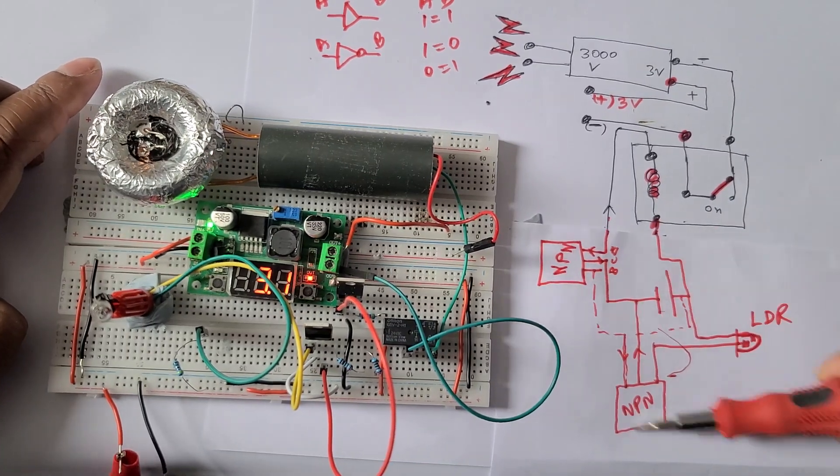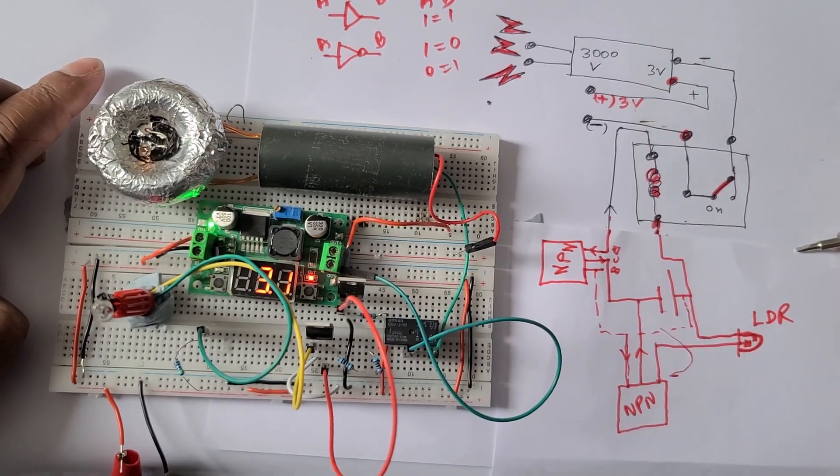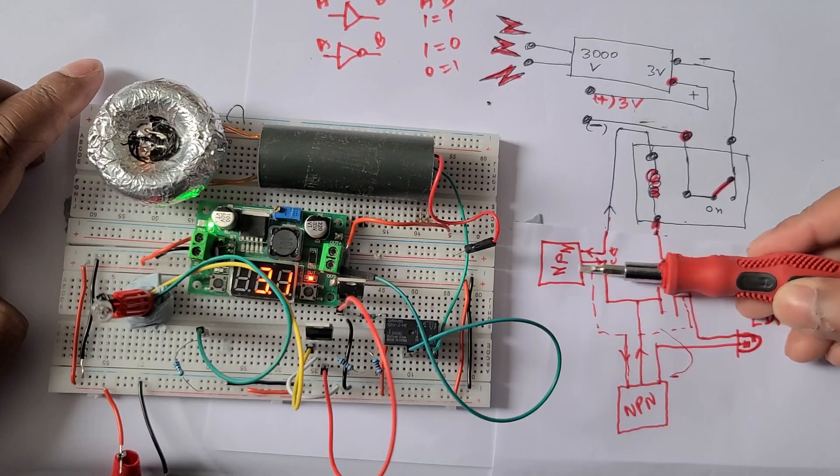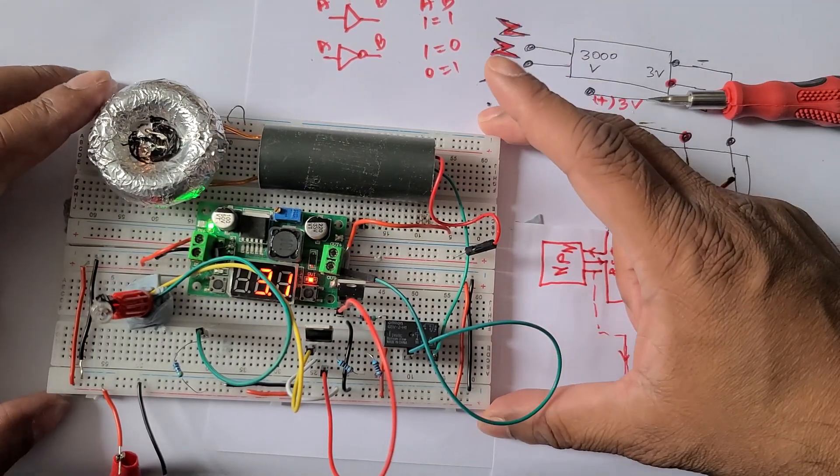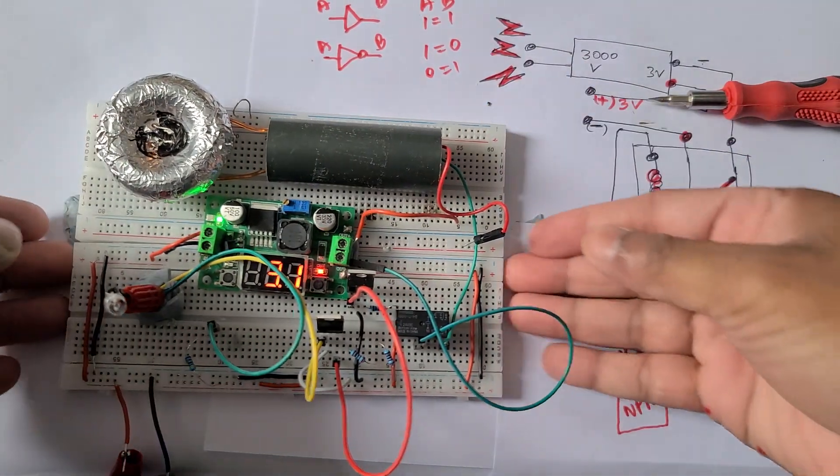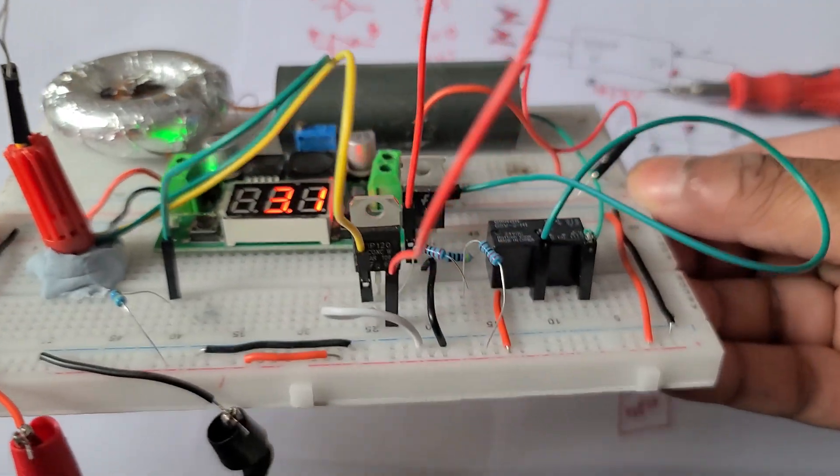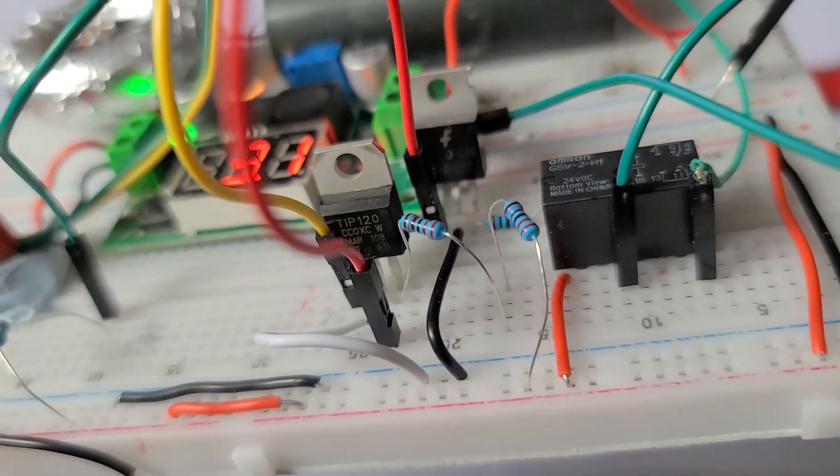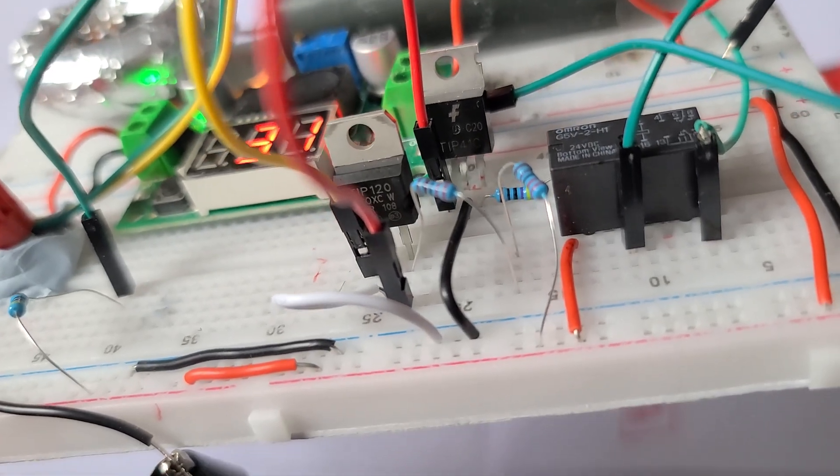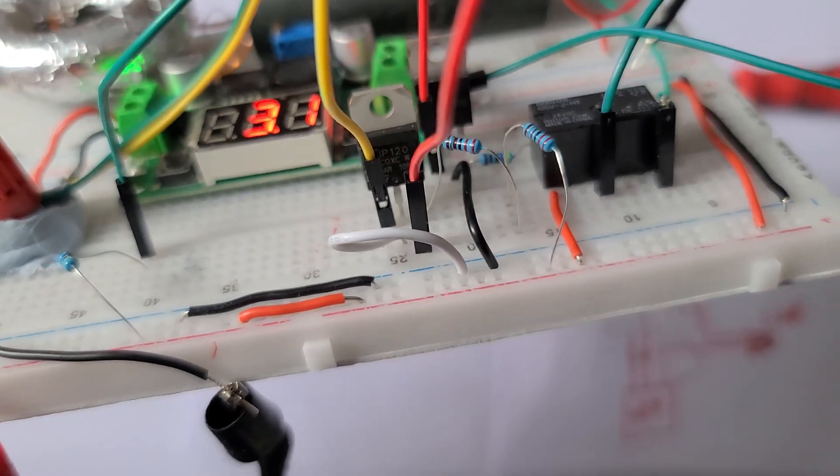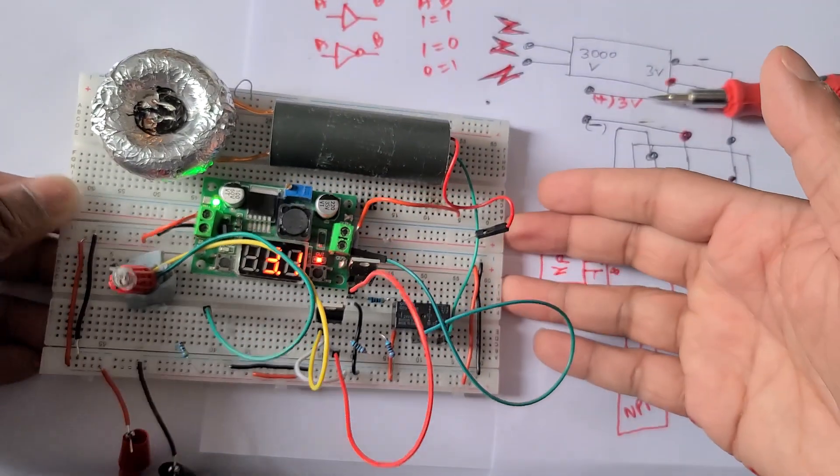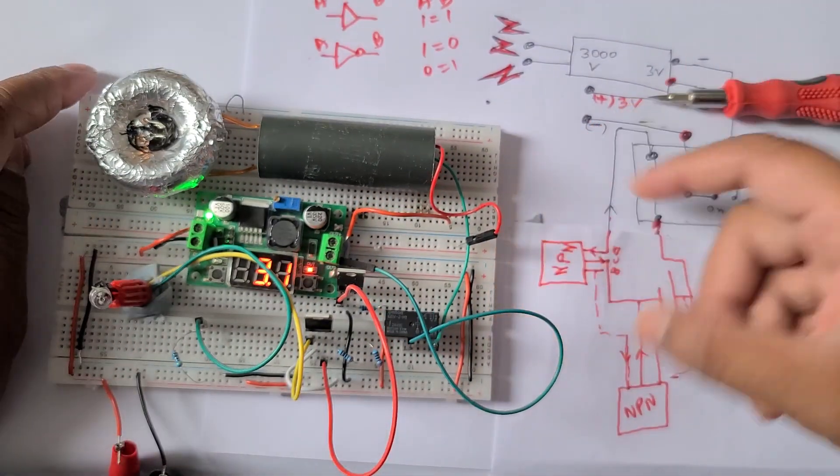Now I have used this inverter circuit mechanism, so basically in normal condition this NPN transistor which is a TIP41C transistor, I'll show you, hope you can read it. TIP41C and this one is TIP120, but both are NPN transistors so the working mechanism is identical.